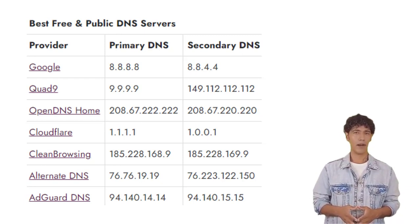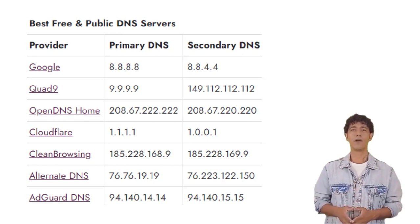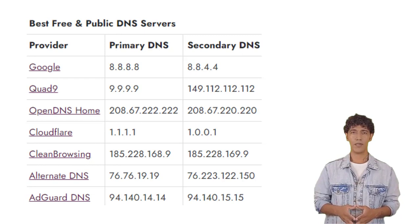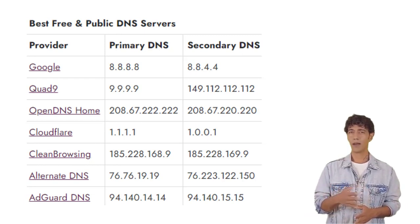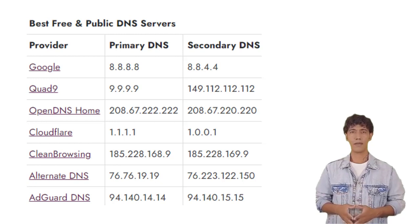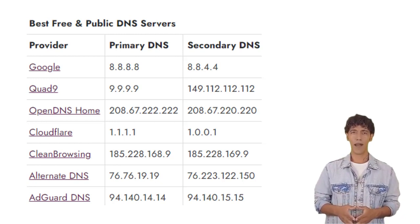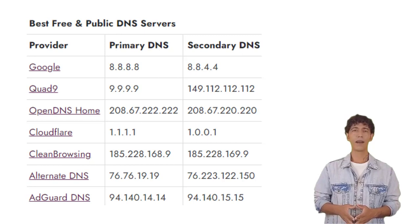Such features include privacy, parental controls, and high redundancy. The most common public DNS server that you can opt for is Google DNS. The server offers a host of amazing features — it is free and does not require you to open an account. Here is the IPv4 address you'll be needing: 8.8.8.8 and 8.8.4.4.